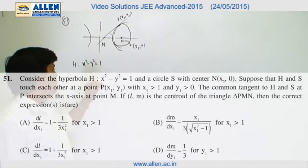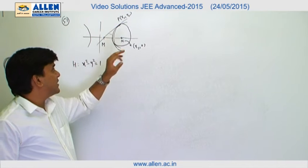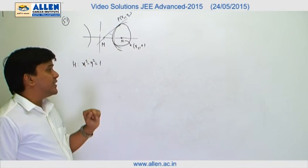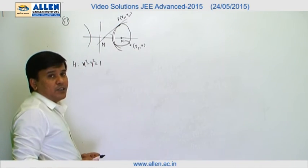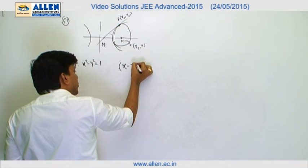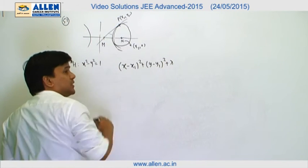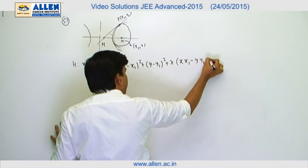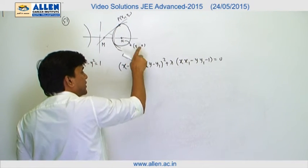In question 51, a hyperbola x² minus y² equals 1 is given. Point N is at (x2, 0), which is the center of a circle that touches the hyperbola at point P(x1, y1). The tangent at P(x1, y1) intersects the x-axis at M. We use the concept of family of circles, assuming a point circle at P: (x minus x1)² plus (y minus y1)² plus λ times the tangent line equals 0.